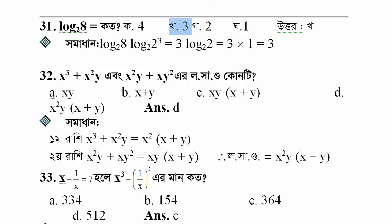The next number: we have the expression x³ + x²y + xy². Taking common factors from the first two terms: x² is common, giving x²(x + y). Then from the remaining xy² term, taking xy common gives xy(x + y). So the common factor is (x + y), and the answer is x²y(x + y). Option 2 is correct.